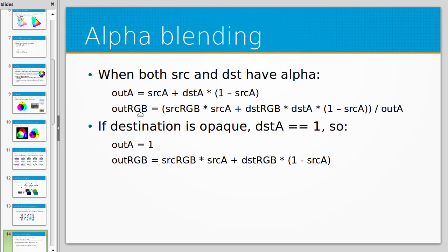You multiply the destination alpha by 1 minus the source alpha and then add the source alpha to get the output alpha. The output RGB value for each channel is the source colour times the source alpha, plus the destination colour times the destination alpha times 1 minus the source alpha, all divided by the output alpha.